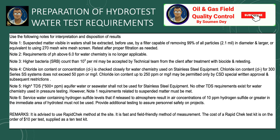Service water containing hydrogen sulfide levels that, if released to atmosphere, result in an air concentration of 10 ppm or greater in the immediate area of the hydrotest must not be used. It is advised to use the rapid check method at the site — it is a fast and field-friendly method of measurement. The cost of a rapid check test kit is on the order of approximately $10 per test, supplied as a 10-test kit. Note that there might be other types of kits available in your area.